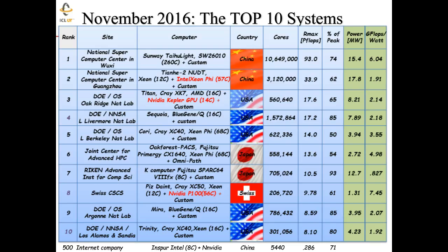This is the top 10 computers on the list today. The number one machine is at the National Supercomputing Center in Wuxi, China — a computer called the Sunway TaihuLight. That machine uses the Shenwei processor, a Chinese processor, the SW26010. It has 260 cores in one socket — 260 computational cores in a single chip connected through a custom interconnect. That's a totally Chinese machine in its character, and that number one computer has over 10 million cores in it.